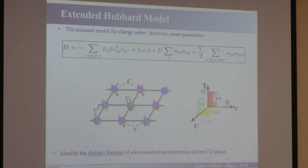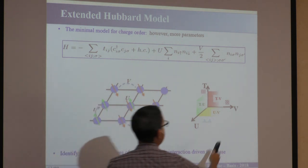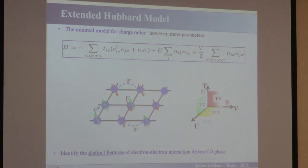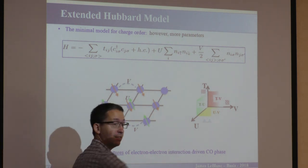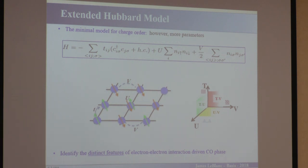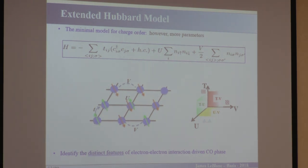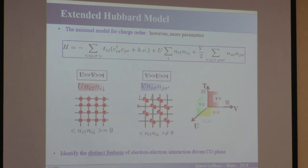This is a much harder problem. The phase diagram of the Hubbard model when V=0 is not rigorously understood, and a lot of people are still studying the extended Hubbard model which now adds an entire new V axis. So you're starting from a model that's not understood and extending beyond that. But the goal is trying to understand some distinct features of electron-electron interaction driven charge order effects.